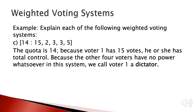This example shows the quota is 14 and the first voter has 15 votes, so the first voter has total control. The remaining four voters have no power in this system because the sum of all their weights is less than the quota. We call the first voter a dictator.